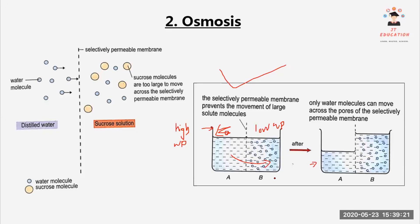Some students ask why the sucrose molecules can't move in the opposite direction. It's because this membrane prevents the sucrose molecules from crossing — it only allows the movement of water. The sucrose molecules are too large to move across the selectively permeable membrane.